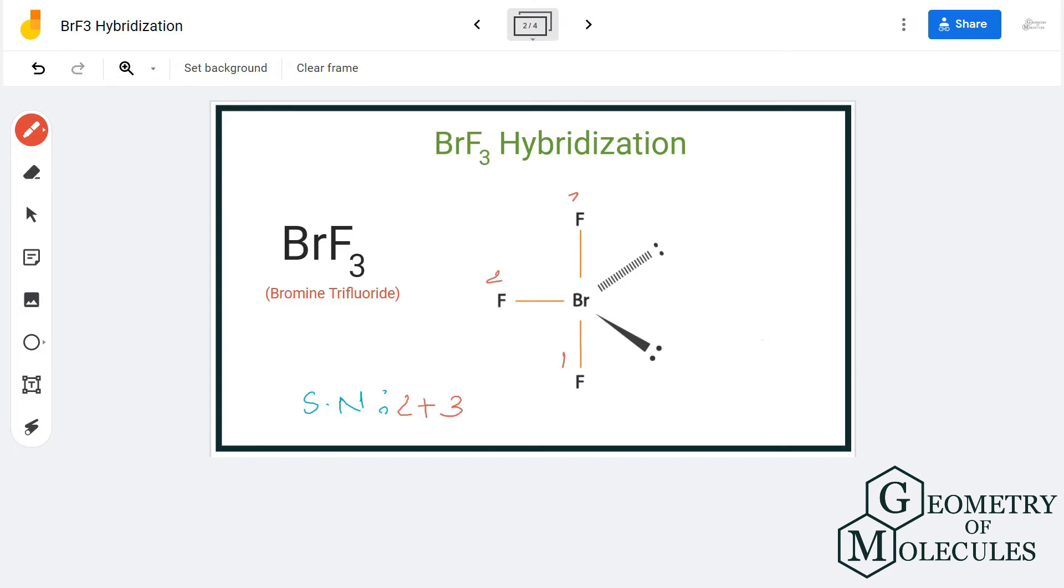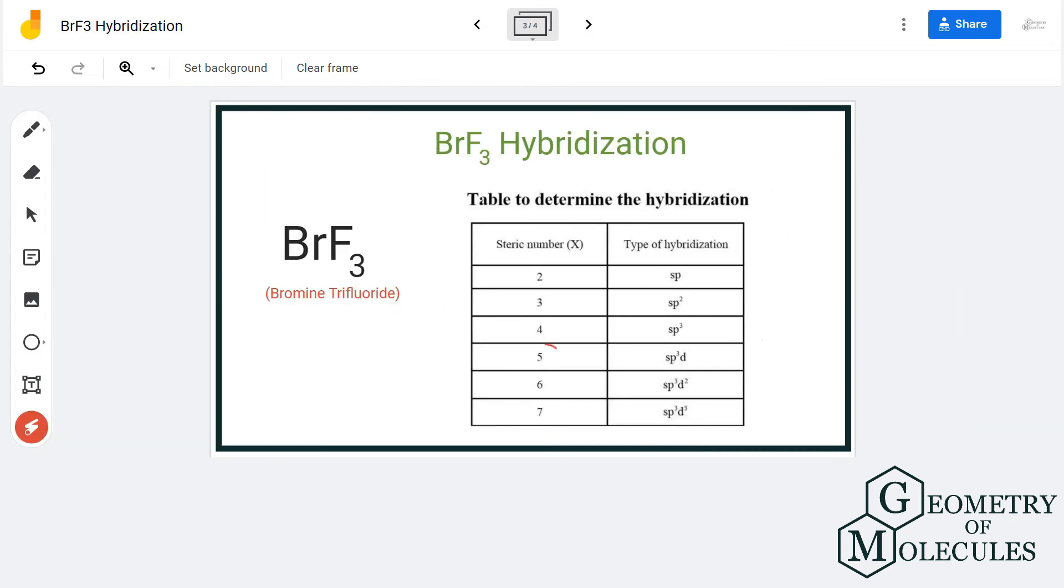So the steric number here is five. And referring to this table, we can see that atoms that have steric number five have the hybridization of sp3d. So the hybridization of BrF3 will be sp3d for bromine trifluoride.